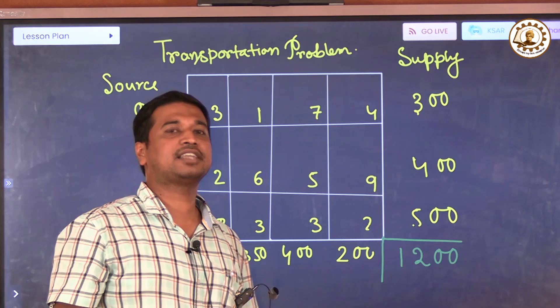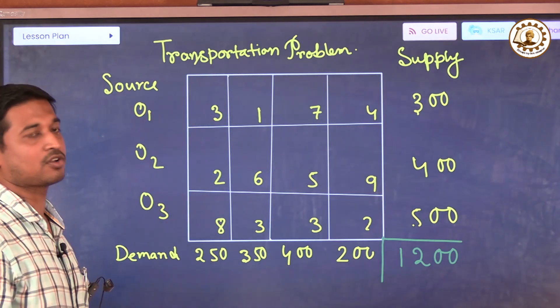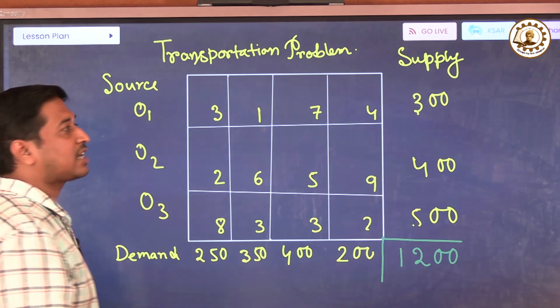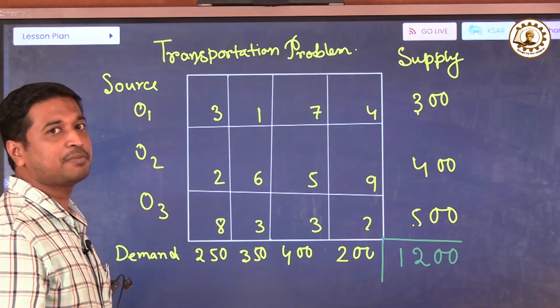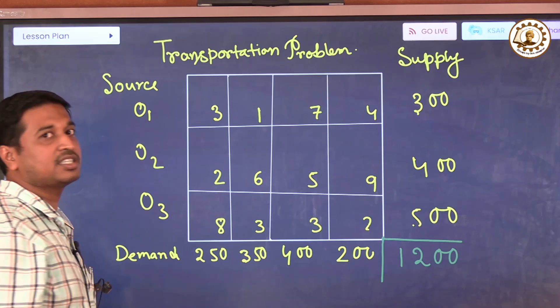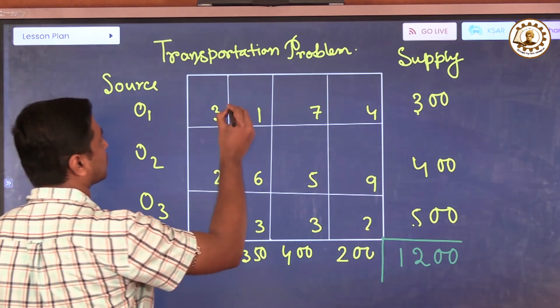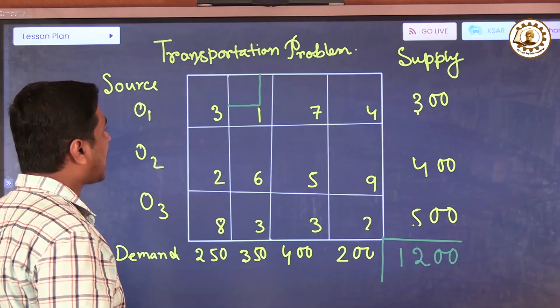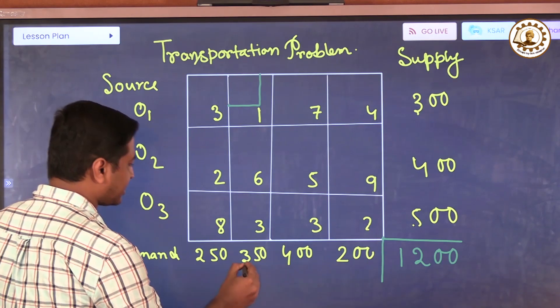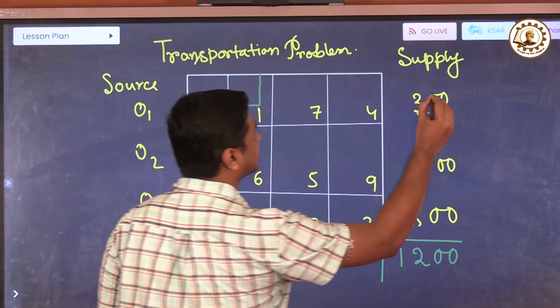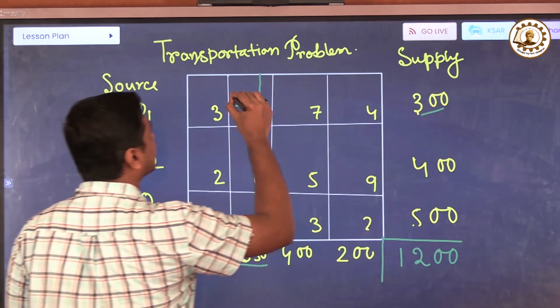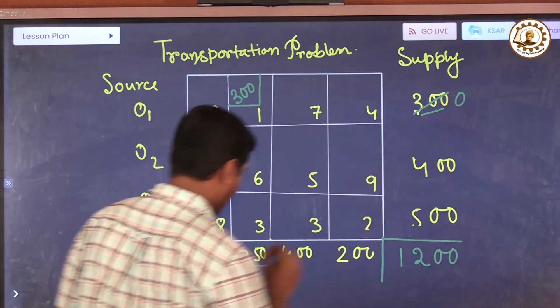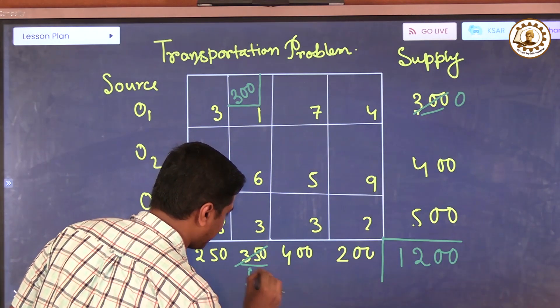Now we solve using the Least Cost Cell Method. We check from this table where the cost of transportation is minimized. Here we can see that one rupee is the minimized transportation cost. So first, you block this. Now we can see there is 350 demand and 300 supply. So we put here 300. This is zero and this is 50 remaining.